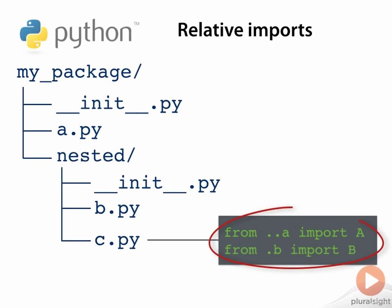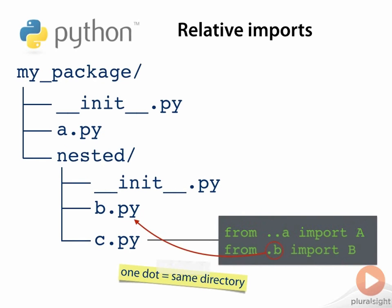To perform a relative import, you have to use the `from module import names` form of import, and you start the module portion of the statement with one or more dots. Each dot stands for a package in the hierarchy containing the current module. One dot means the package containing the current module.